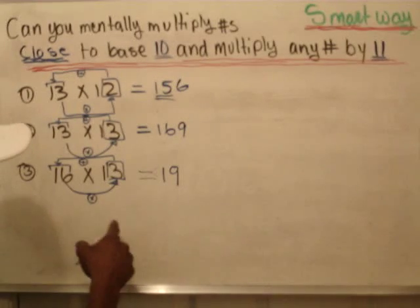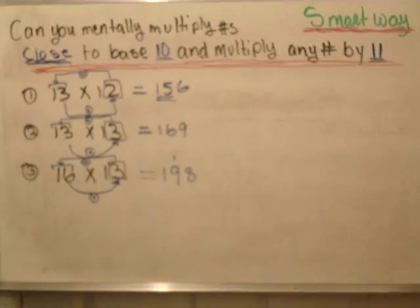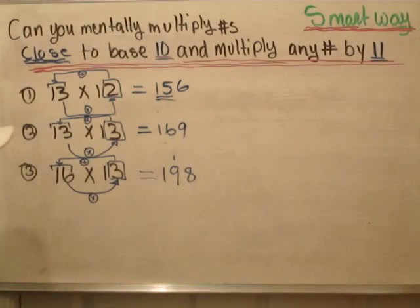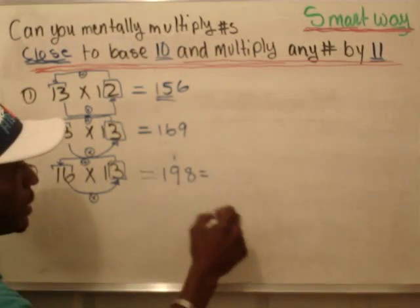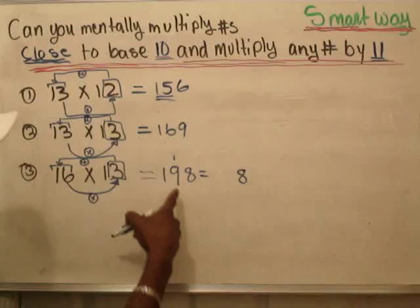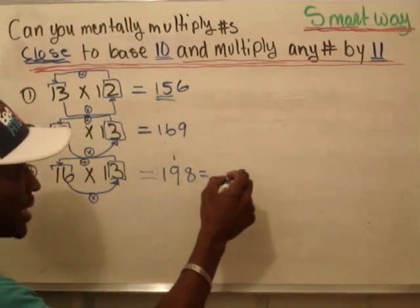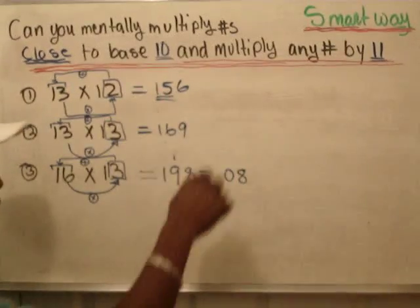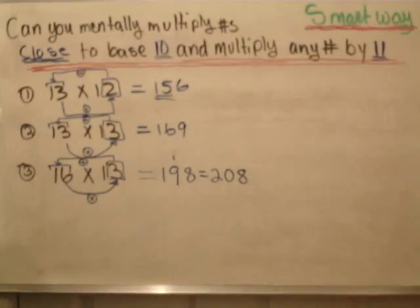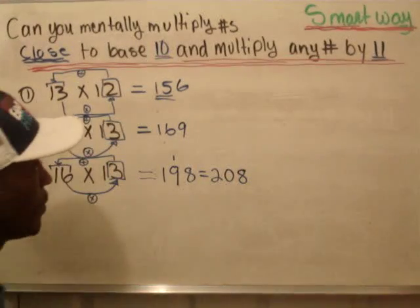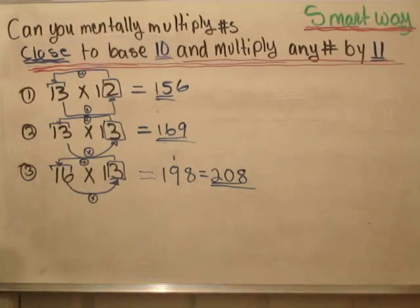Multiplying those two gives you 18, so you're going to have a 1 here and then an 8 behind the 9. The final answer is 8. 1 plus 9 gives you 10 — put down 0, carry the 1 over — it's going to give you 208. And 208 will be the answer. That's carrying the 1 over.